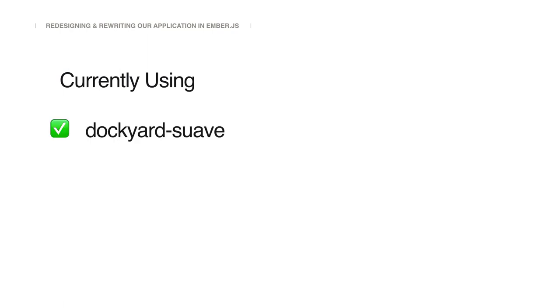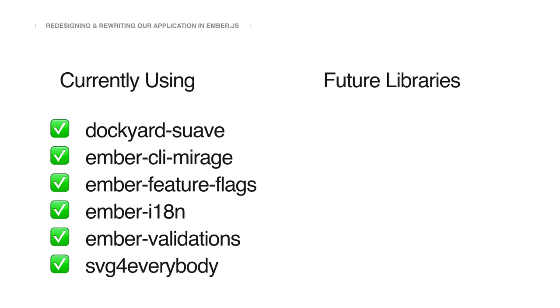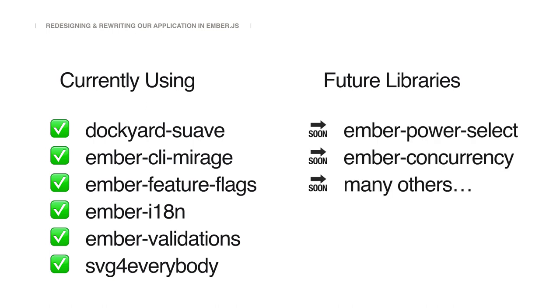We relied on many community solutions and are currently using things like DocGuard Suave, Ember CLI Mirage, Ember Feature Flags, IATN, Ember Validations, and SVG for Everybody. There are other libraries we're not using yet but would like to incorporate, such as Ember Power Select, Ember Concurrency, and many others that we learn about along the way.